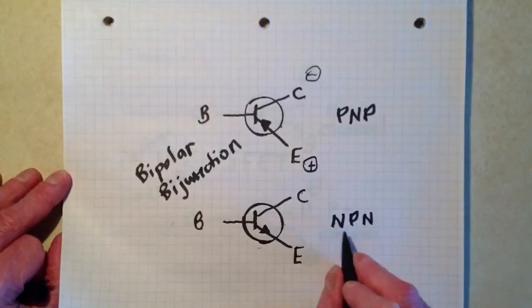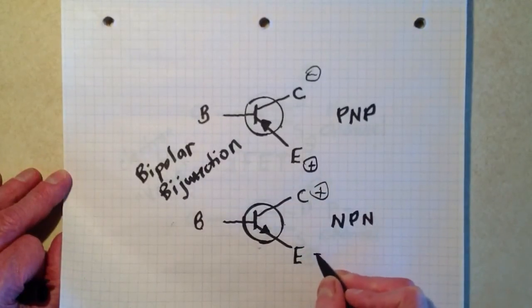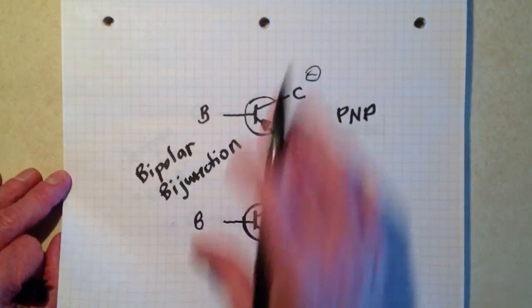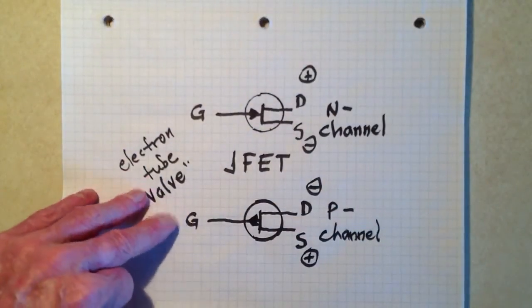In the NPN device, the collector is relatively positive with respect to the emitter. So that's how you can tell in a circuit if someone has had the gall to leave those arrows out.